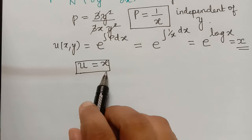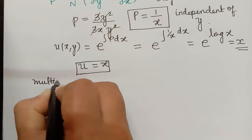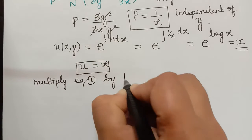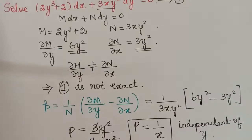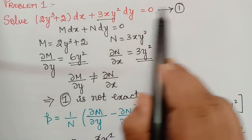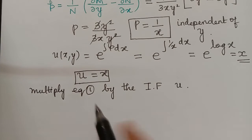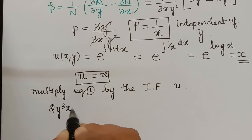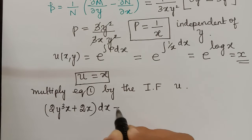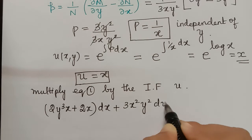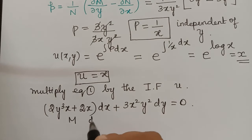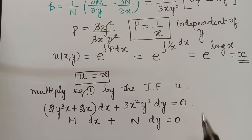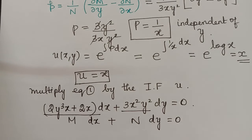After finding the integrating factor, we multiply equation 1 throughout by u = x. Multiplying by x, we obtain: (2y³x + 2x) dx + 3x²y² dy = 0. This is our new equation. Now we have to check whether this equation is exact.